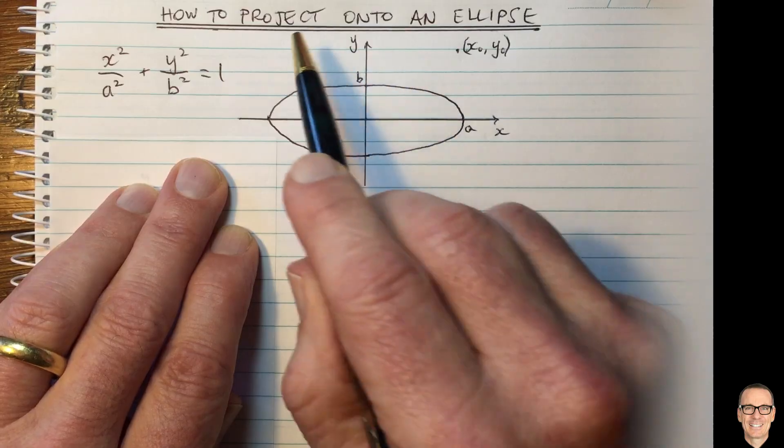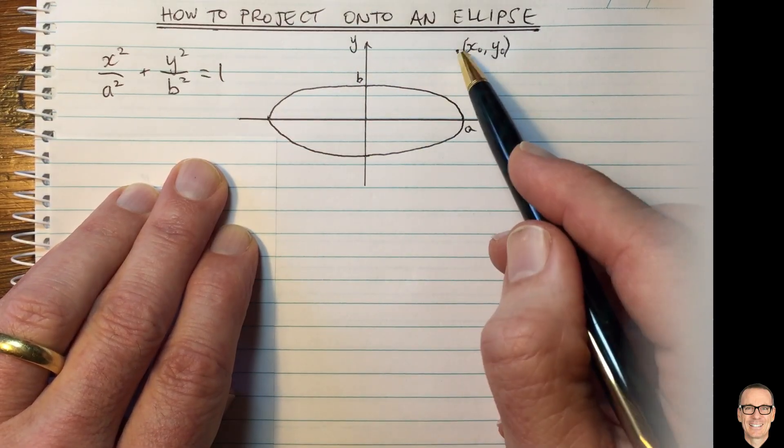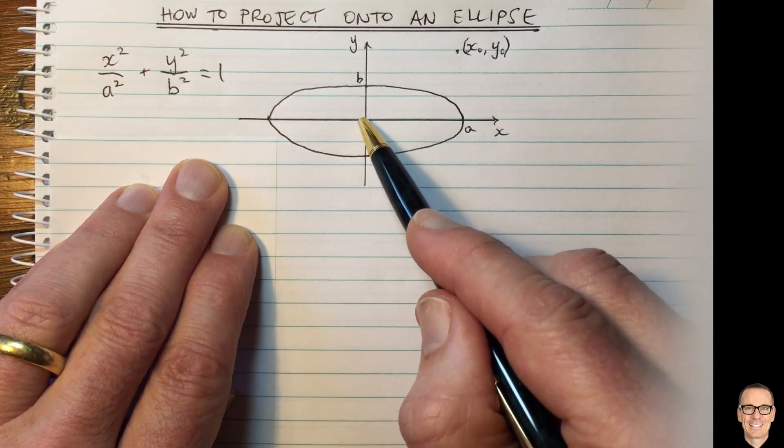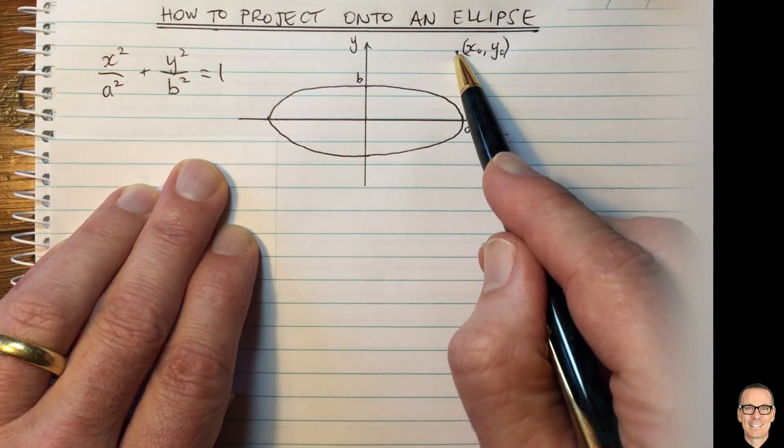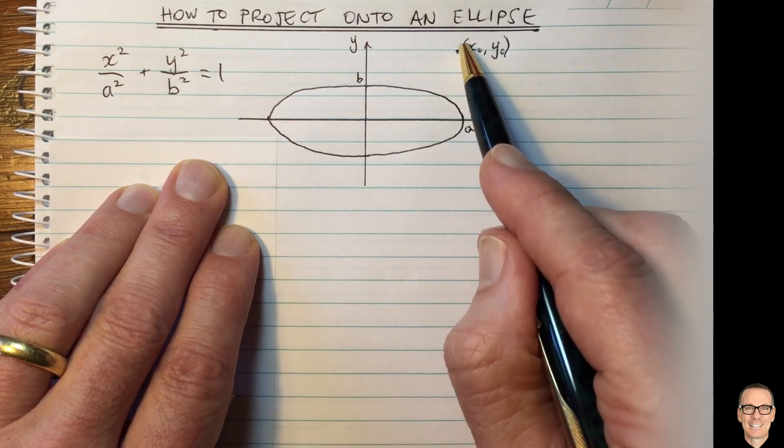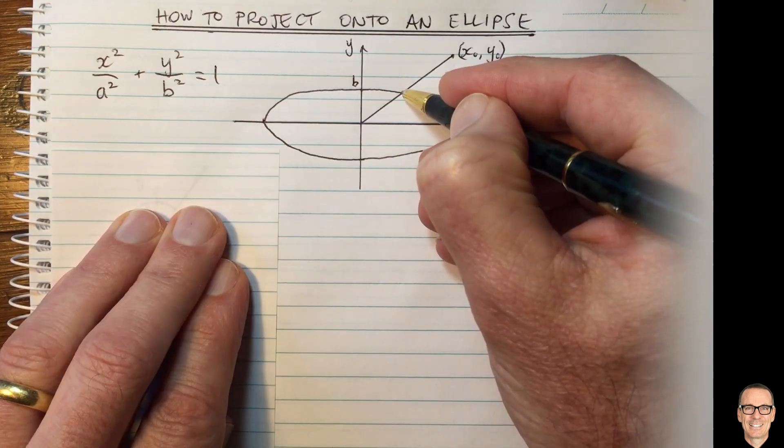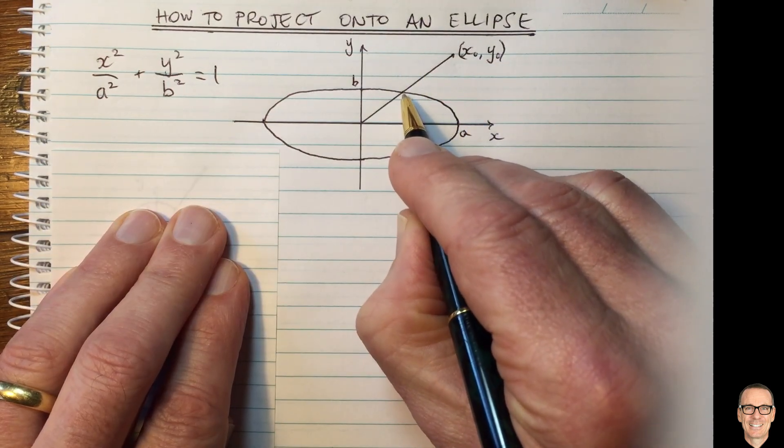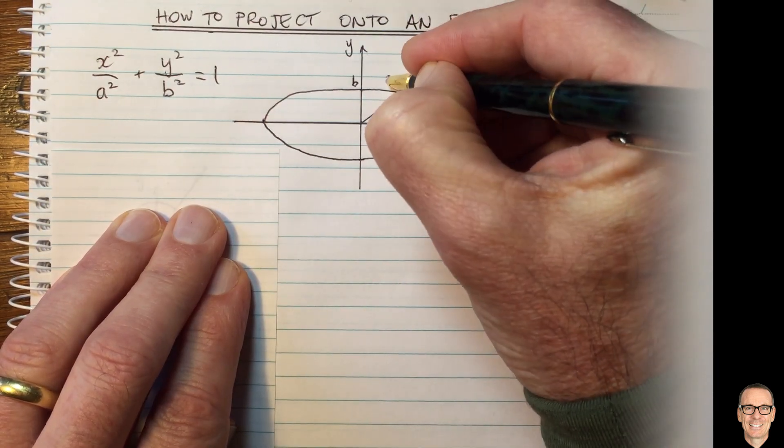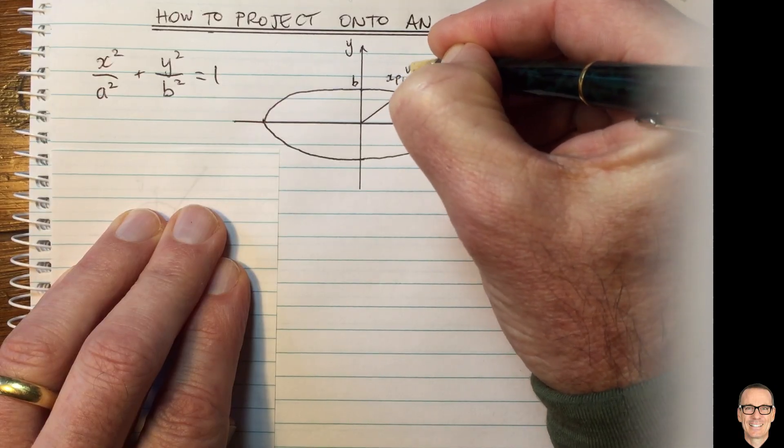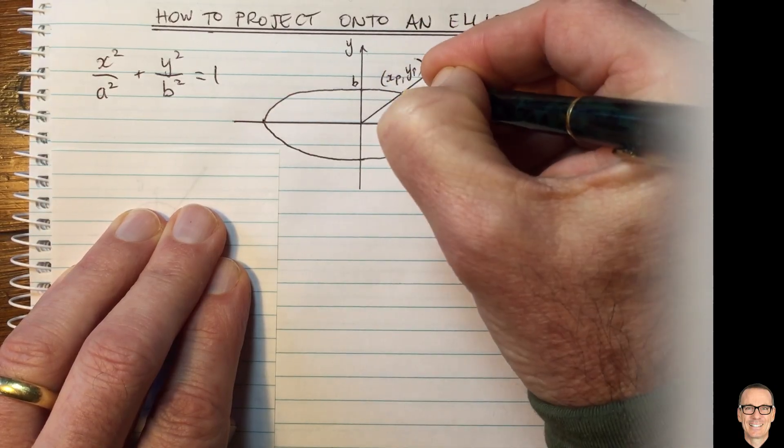So there's two types of projections we're going to consider here. The first one is directly towards the origin. So we want to take this point and find the point on the ellipse that is along the line directly towards the origin. And we're going to label that point as xp, yp. That's the point we're interested in, the projected point.